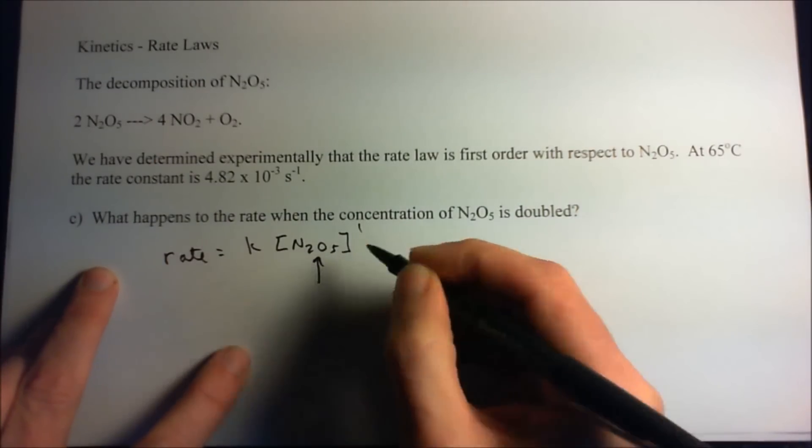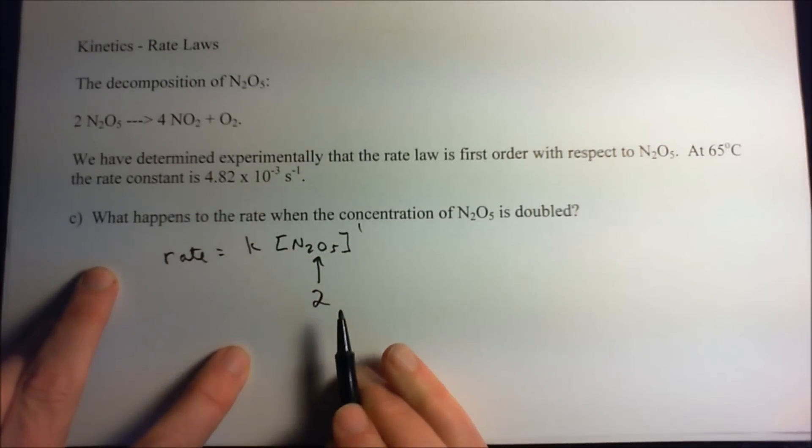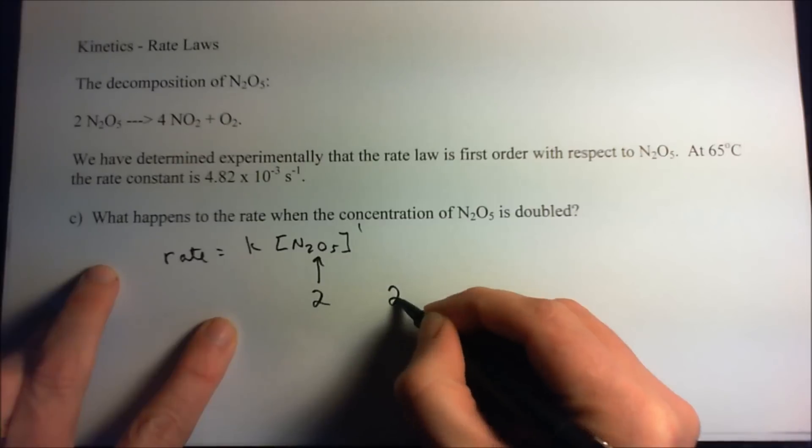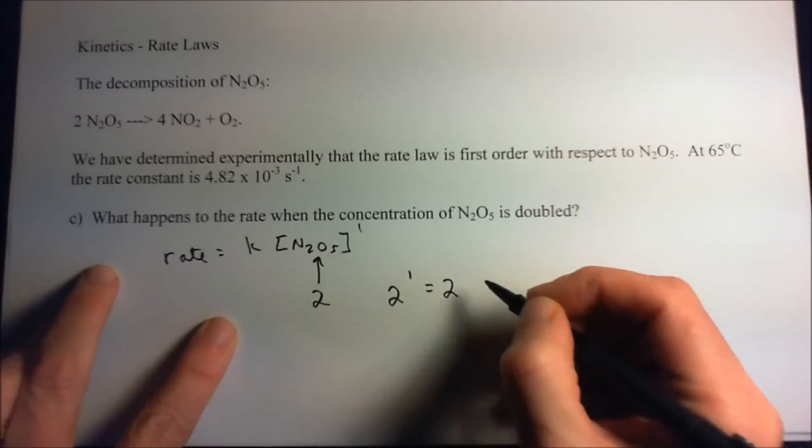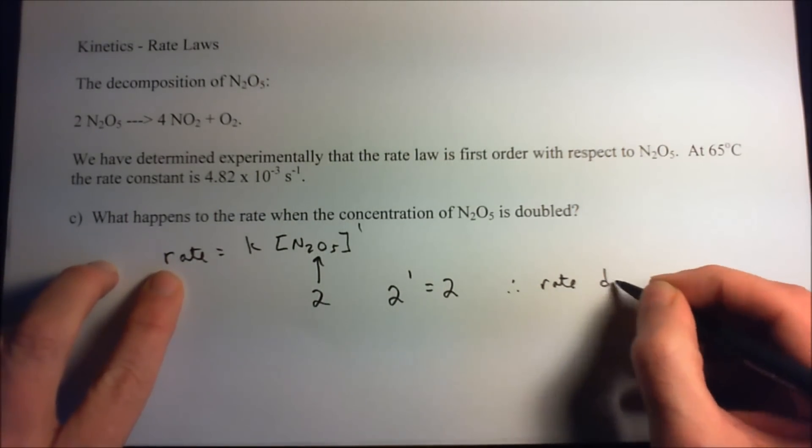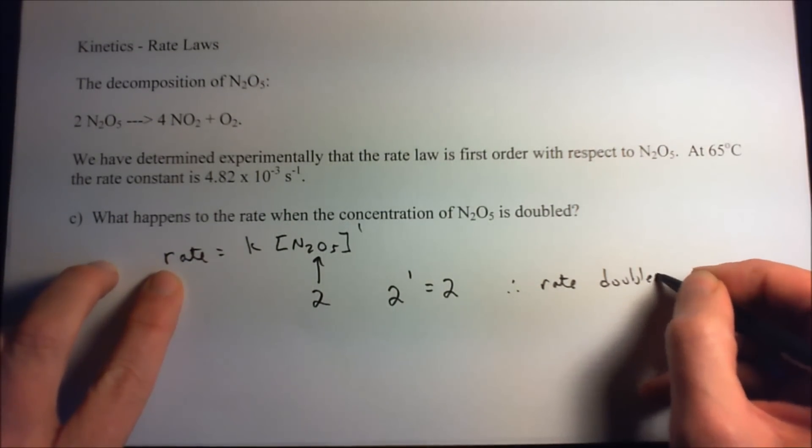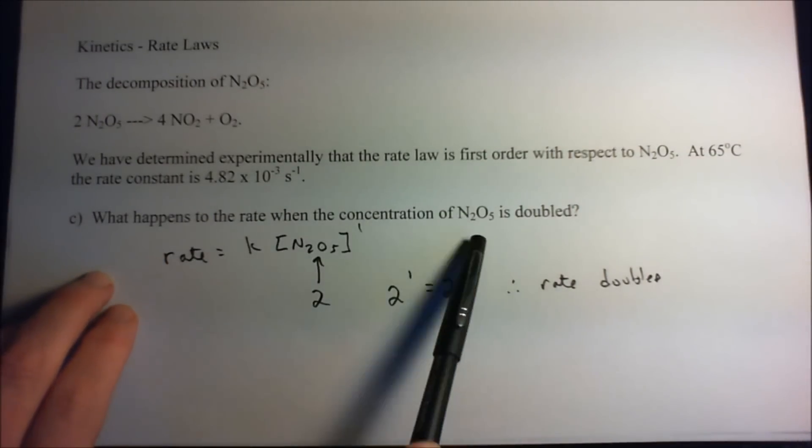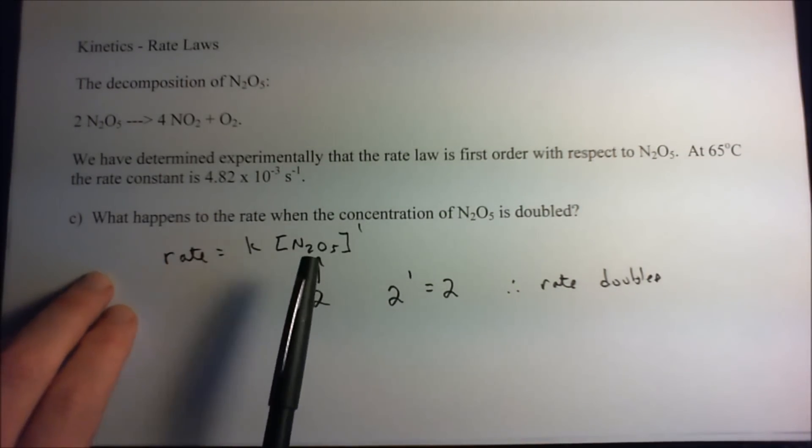And if we double this concentration, well then we're going 2 to the 1 and that equals 2. So therefore the rate doubles. The only way we know that the rate doubles is because we already have the rate law.